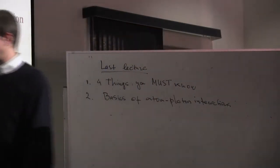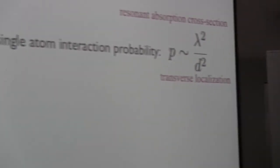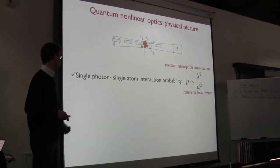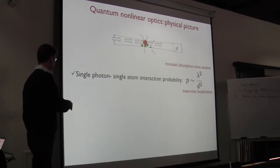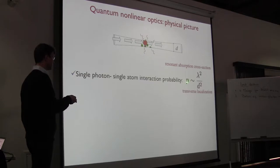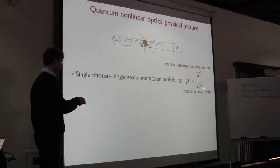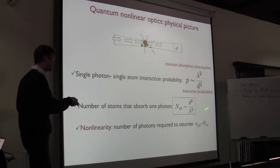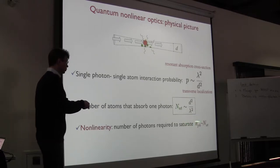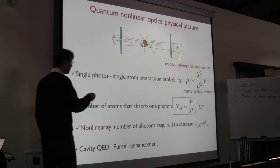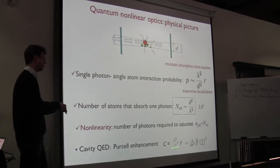Cooperativity is basically the probability of interaction between one photon and one atom. This key parameter quantifies the nonlinearity of the medium. In this simple situation where you focus a light beam in a cloud of atoms, the probability of single atom-single photon interaction is a ratio of the resonant absorption cross-section to the beam area. This gives the number of photons needed to produce a substantial nonlinear response. Once you put a cavity, you multiply by cavity finesse — and that's exactly what cooperativity is about.